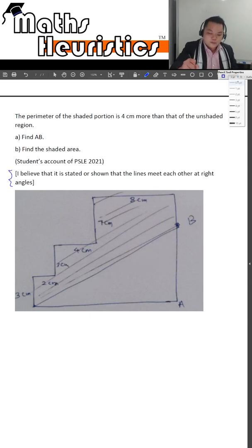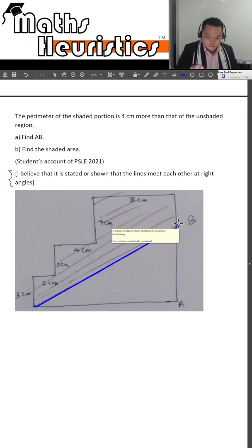So how can this be done? Let's first define what the perimeter of both regions are first. For the shaded region it will comprise of this slanted length,